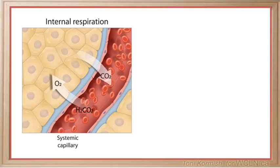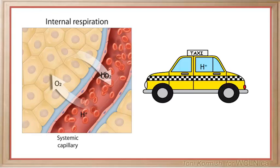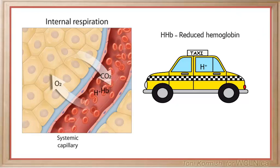Carbonic acid breaks down right away to form the bicarbonate ion and hydrogen ions. This is the source of hydrogen ions that needs to be buffered by the hemoglobin molecule, forming the molecule called reduced hemoglobin.